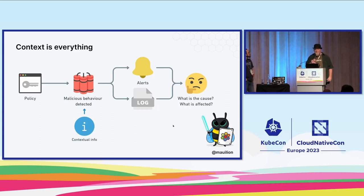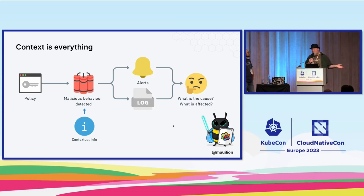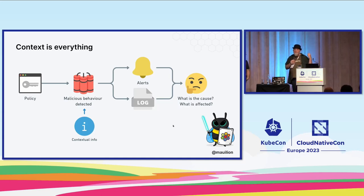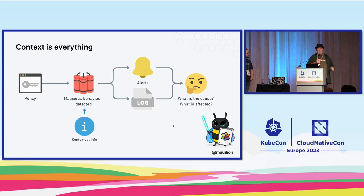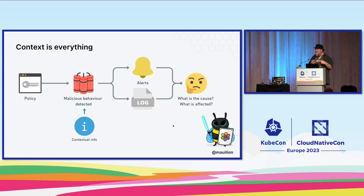The example here is that you would write policy such that when you see malicious behavior detected, you can actually make sure that you get an alert that is actionable. You can send that alert to logs, you can have that alert take an action. But the important piece is it's not just telling you somebody made this system call — it's telling you this process running inside of this pod, running inside of this namespace, running inside of this cluster, made this system call at this time, and it was successful.